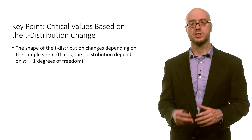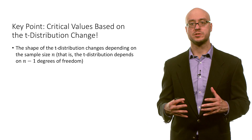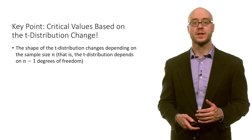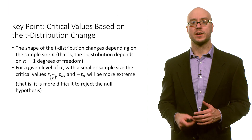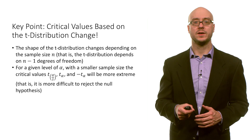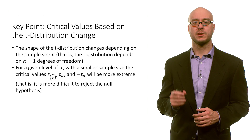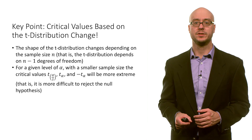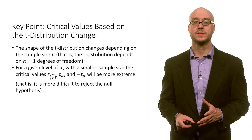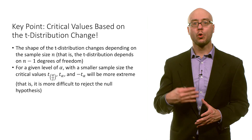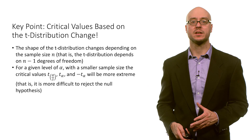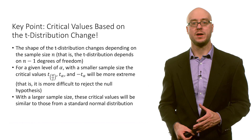The critical values based on the t-distribution change as the shape of the t-distribution changes depending on sample size. So for a given level of alpha with a smaller sample size, the critical values of t-alpha divided by 2, t-alpha, and negative t-alpha will be more extreme — that is, it is more difficult to reject the null hypothesis.